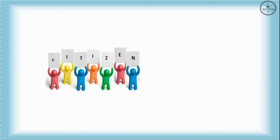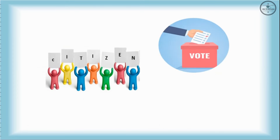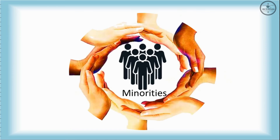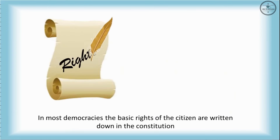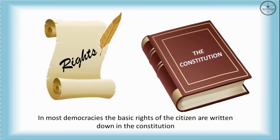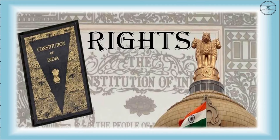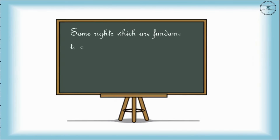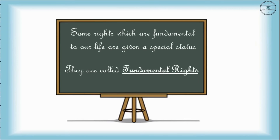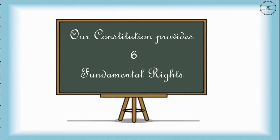Why do we need rights in a democracy? In a democracy, every citizen has the right to vote and the right to be elected to government. Rights protect minorities from the oppression of the majority. In most democracies, the basic rights of citizens are written down in the constitution. In India, some rights which are fundamental to our life are given a special status — they are called fundamental rights. Our constitution provides six fundamental rights.